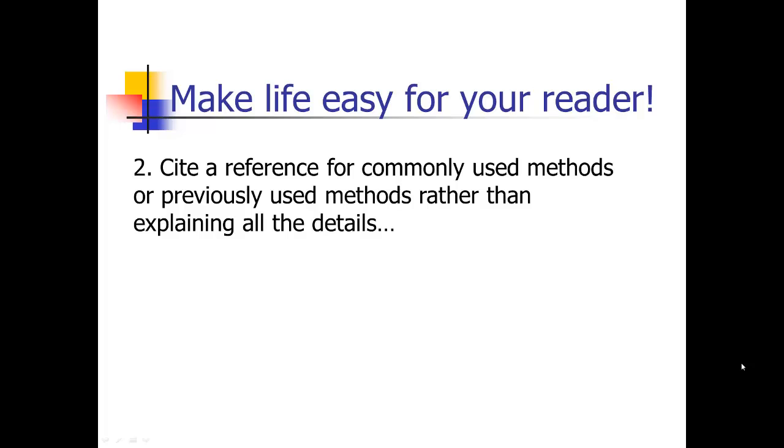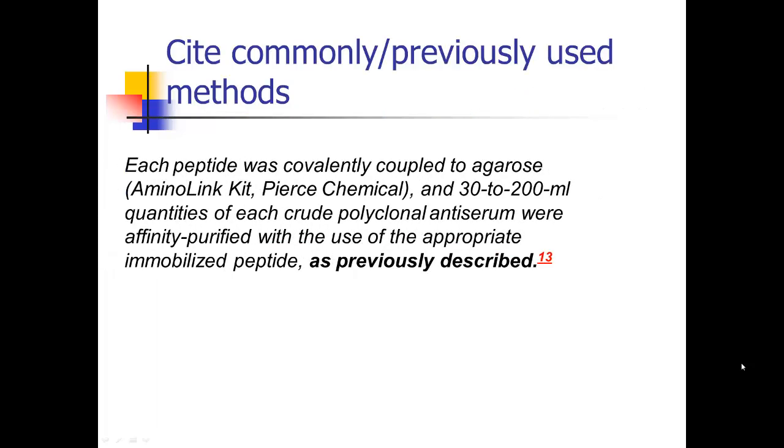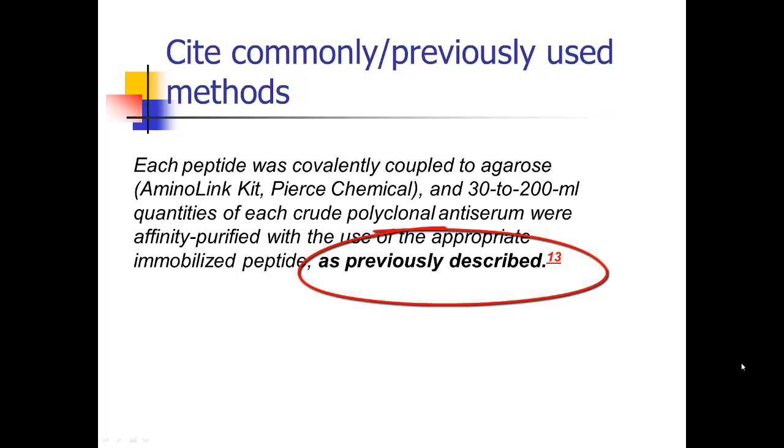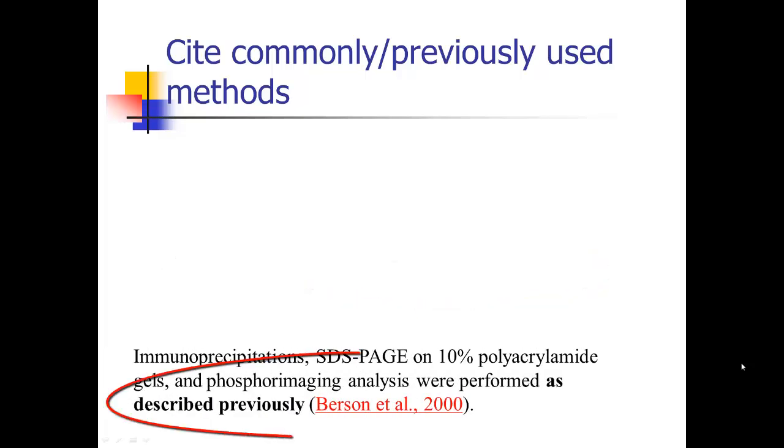Another way to make life easy for your readers is for commonly used methods, things that you've already reported about. Rather than going into all the details, you can refer the reader to those references. Especially if it's not really critical and you don't need to walk the reader through it. Here's 'as previously described' and then give a reference. Rather than having to go through details of things that a lot of people are going to know in your discipline, you can just refer them to a reference to save space.